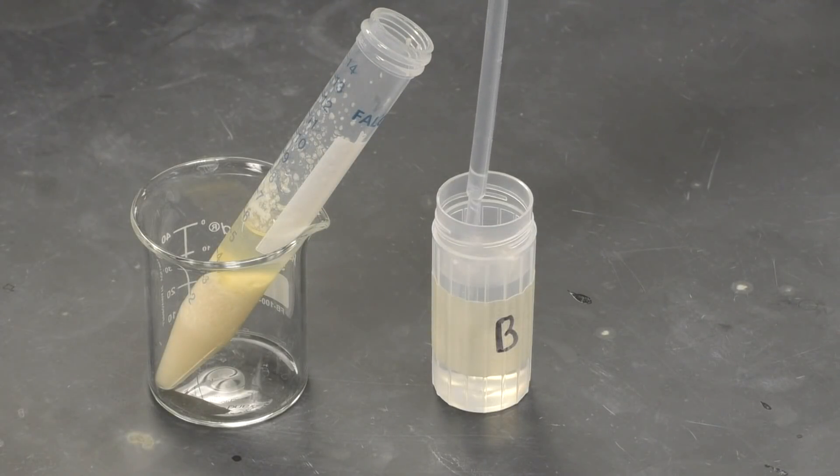The next step is to add 2 to 3 milliliters of the second solvent, and again shake the tube for about a minute.